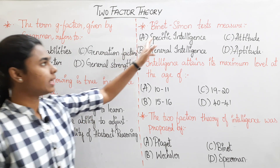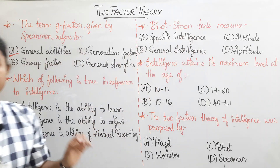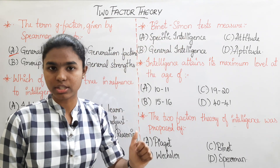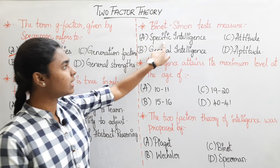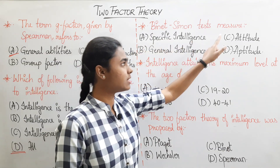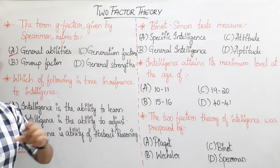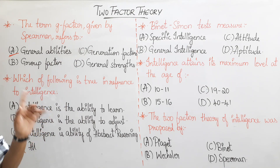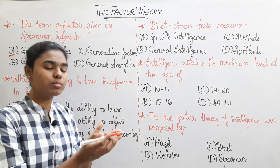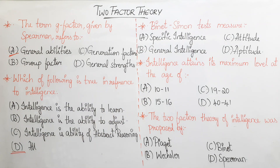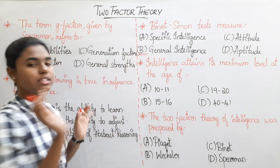Question 3: The Binet-Simon test measures which of the following? Option A: specific intelligence. Option B: general intelligence. Option C: attitude. Option D: aptitude. Attitude refers to how we perceive things, while aptitude refers to our capacity. The correct answer is Option B: general intelligence.